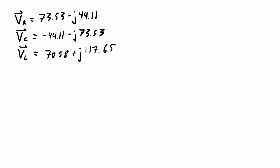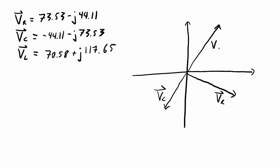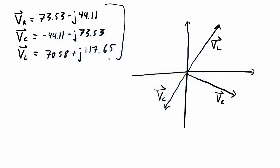I've written out the resistor, capacitor, and inductor voltages because I want to sketch these as phasors. In the real and imaginary plane, the resistor voltage is positive in the real direction and negative in the imaginary direction. The capacitor voltage is negative in both the real and imaginary directions. The inductor voltage is positive in both the real and imaginary directions. Now if I add these phasors together, they should add up to the source voltage, confirming Kirchhoff's voltage law.